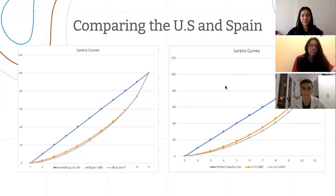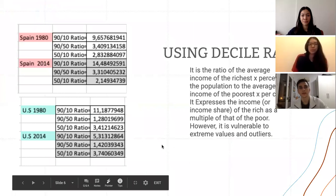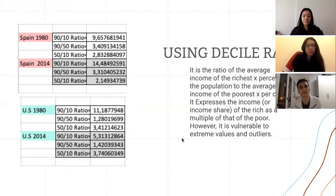Now we will continue talking about equality in both countries from a ratio perspective, which is shown in the following table. There are different measures we can use to better analyze the change in distribution. It is the ratio of the average income of the richest X percent of the population to the average income of the poorest — it expresses the income of the rich as a multiple of that of the poor. However, it is vulnerable to extreme values and outliers.